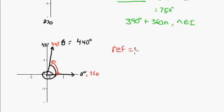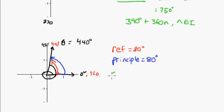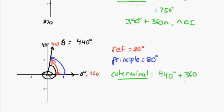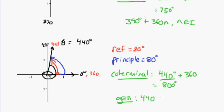The principal angle is closest to the initial arm — rotating from the initial arm to the terminal arm — which is also 80 degrees. The coterminal angle: 440 plus 360 gives 800 degrees as one coterminal angle, and 440 minus 360 gives another. In general, the coterminal angle formula is 440 plus 360n, where n is an element of integers. Thank you.